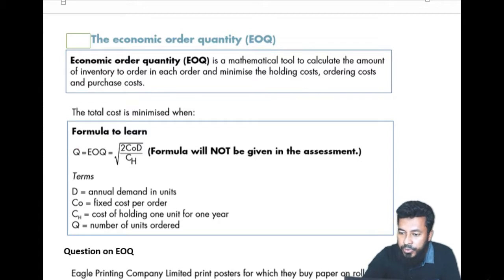The formula is 2 times by CO times by D over CH and a root over.